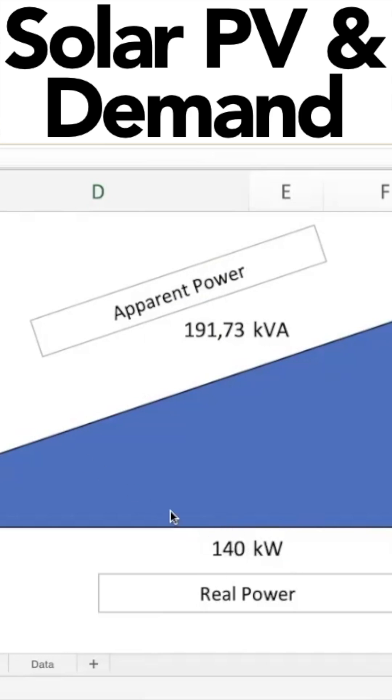So let's assume that it's a weekend and you are drawing 140 kilowatts. Your system shows a demand of 190 KVA. I'm going to change the kilowatts at the bottom over here. So let's assume you've got 120 kilowatts being provided by the solar system. So you're only drawing 20 kilowatts from the grid.